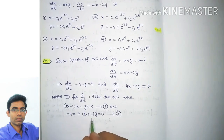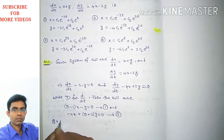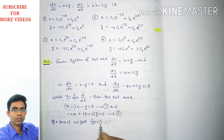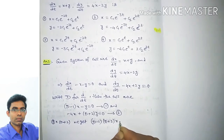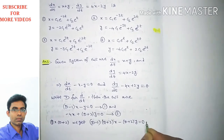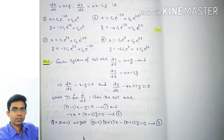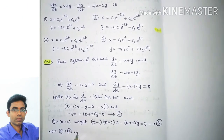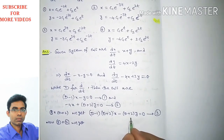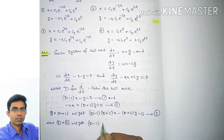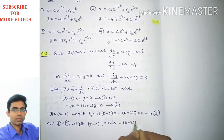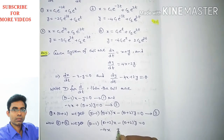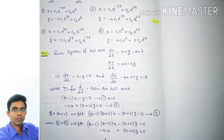We multiply equation 1 by (D + 2), giving (D − 1)(D + 2)x − (D + 2)y = 0, call this equation 3. Adding equation 3 and equation 2: the −(D + 2)y and +(D + 2)y cancel.